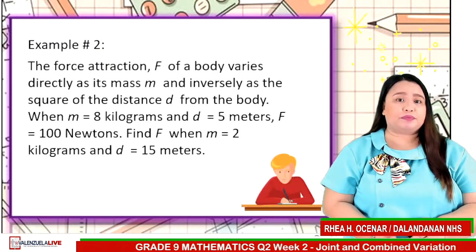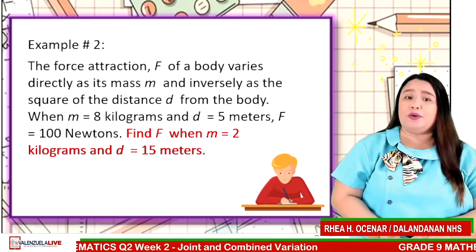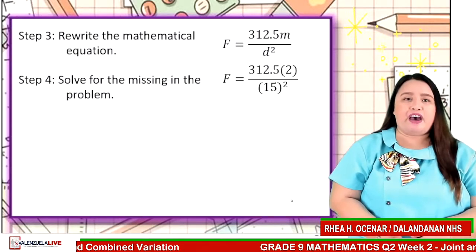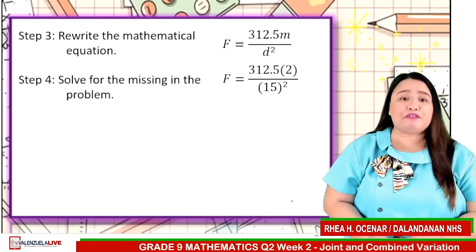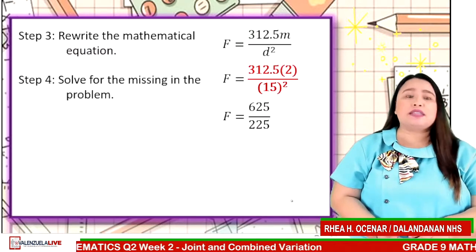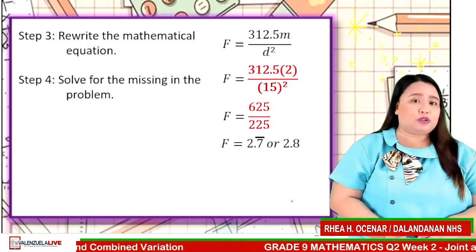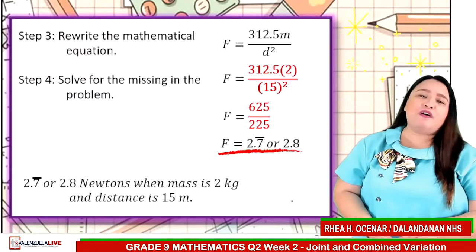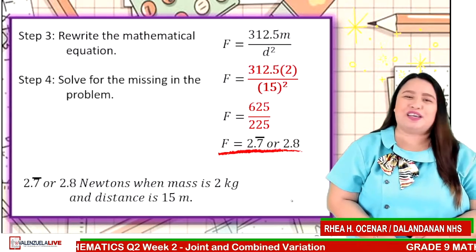Since K is equal to 312.5, our new equation is F is equal to 312.5M over D squared. Step 4: we need to find F when mass is 2 kg and distance is 15 meters. Substituting to our formula, we have F is equal to 312.5 times 2 over 15 squared. Simplifying, we have F is equal to 625 over 225. So F is equal to approximately 2.78. Thus, force is approximately 2.78 N when mass is 2 kg and distance is 15 meters.